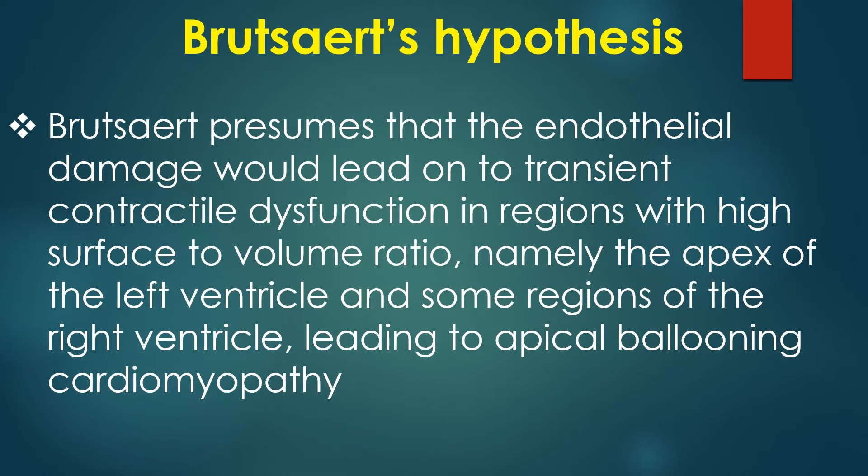Brutzard presumes that the endothelial damage would lead to transient contractile dysfunction in regions with a high surface-to-volume ratio — namely the apex of the left ventricle and some regions of the right ventricle — leading to apical ballooning cardiomyopathy.